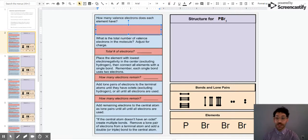For each tab inside of here you're going to create a different structure for a molecule and that molecule is given to you here. So here we're making PBr3 or phosphorus tribromide.